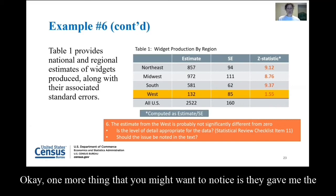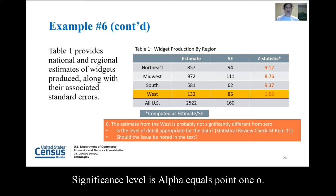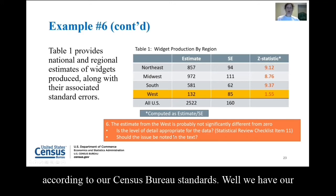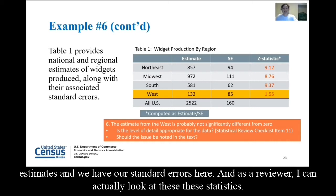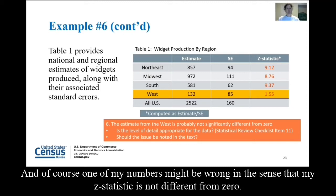One more thing to notice: they gave us the estimates and the standard errors, so we can compute a Z-statistic. The Census Bureau significance level is alpha equals 0.10. Therefore, a Z-statistic greater than 1.1645 is statistically different from zero according to our Census Bureau standards. We have our estimates and standard errors here, and as a reviewer I can look at these Z-statistics.